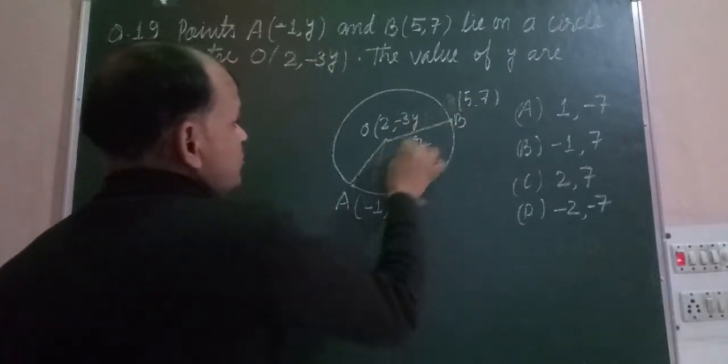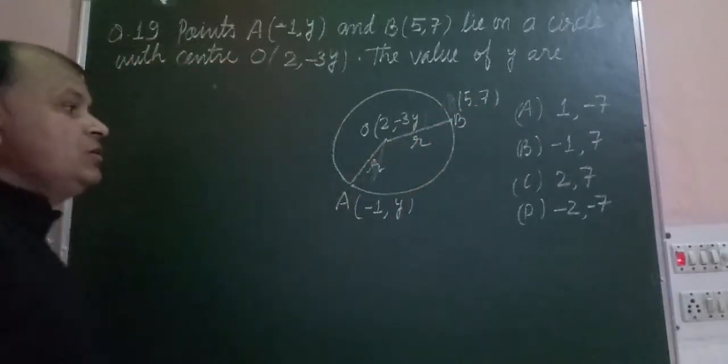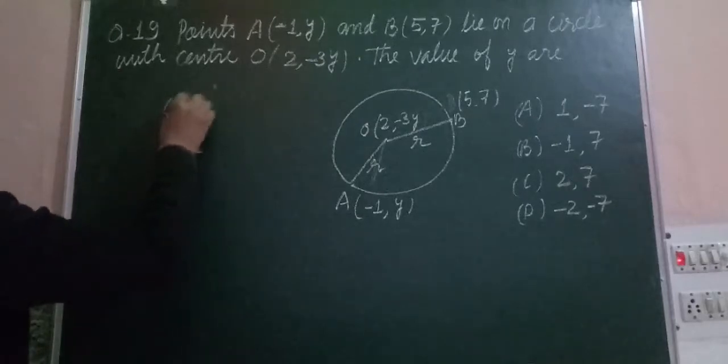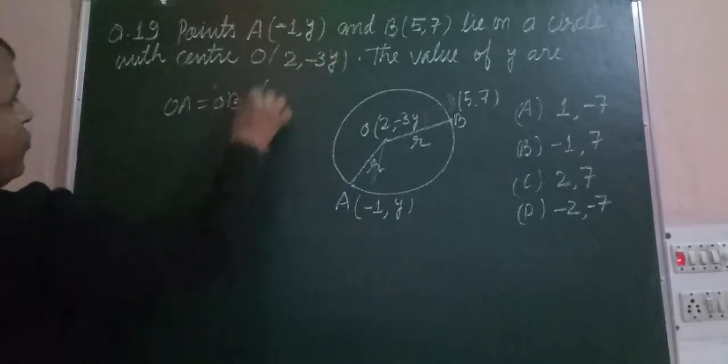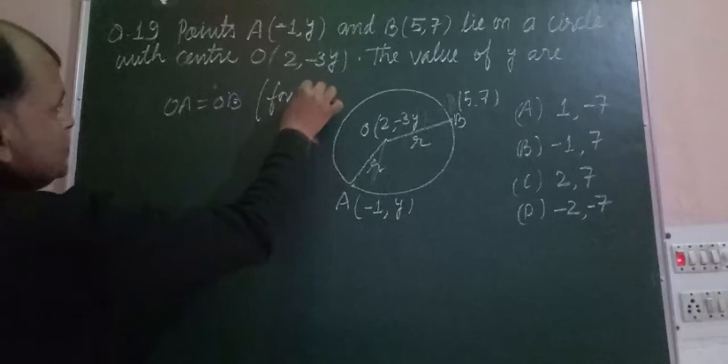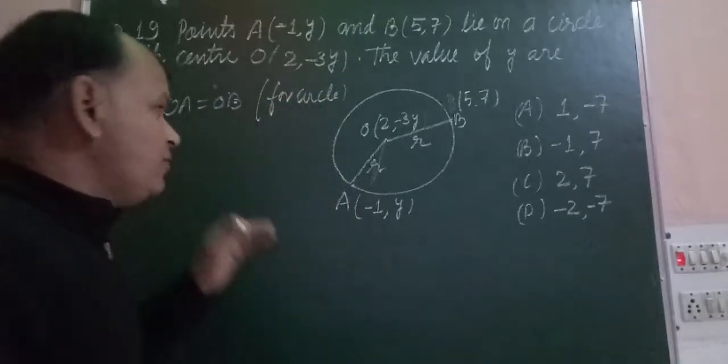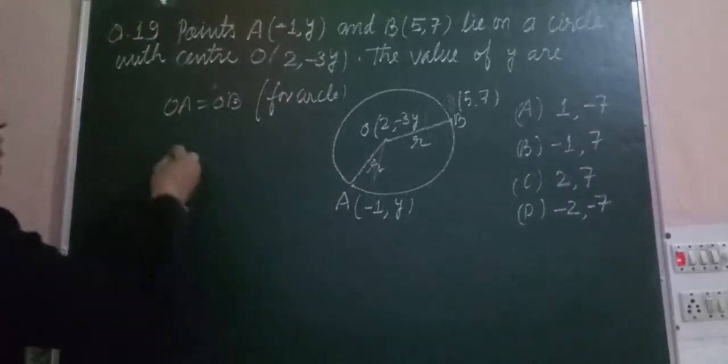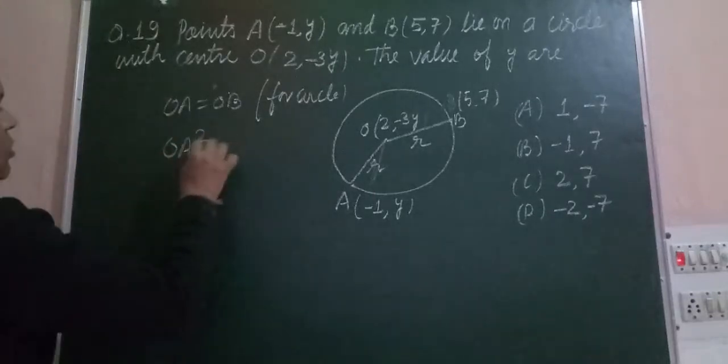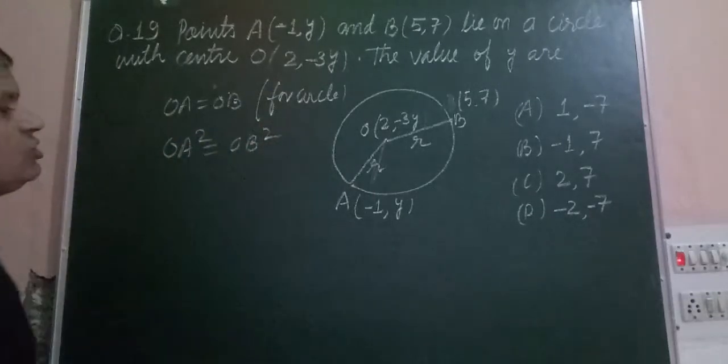These are two radii whose distances are equal. So OA equals OB for a circle, because A and B are points on the circumference. Therefore, OA² equals OB². We use the distance formula here.